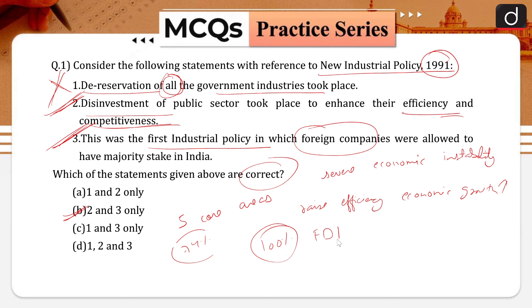With regard to the foreign technology agreement, there were automatic approvals for technology-related agreements. Therefore, the correct answer for this question is option B, that is two and three only.